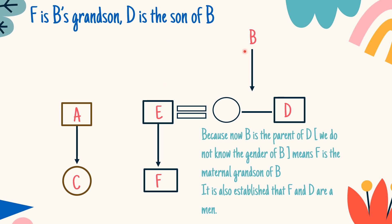B is D's parent, and F is the child of E and D's sister. F is B's grandson, which means F is male. D is the son of B, which means D is also male. So F and D are both men. B is the parent of D, but we do not know the gender of B.